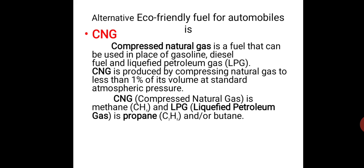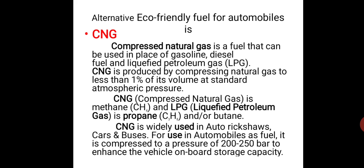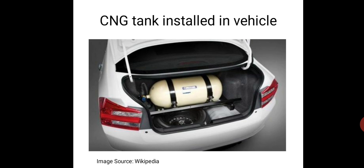CNG is essentially methane (CH4), while LPG is a mixture of propane and butane. CNG is widely used in auto-rickshaws, cars, and buses — it started in Delhi, then Ahmedabad, and now Mumbai. It is compressed to 200–250 bar to enhance the vehicle's onboard storage capacity, meaning more fuel can be held in less space. You can see an image of a CNG tank in a car boot. Diagrams and content are acknowledged from Wikipedia.